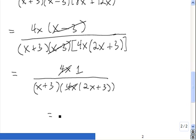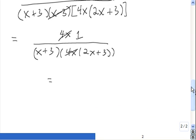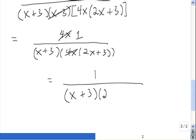So cleaning this up a little bit, we see that it is equal to 1 divided by (x + 3) times (2x + 3). And that is completely simplified.